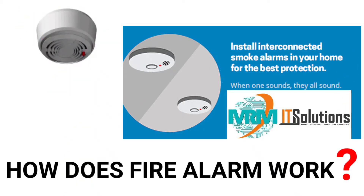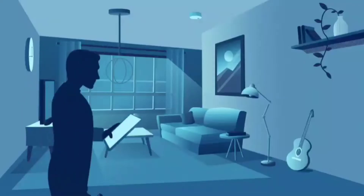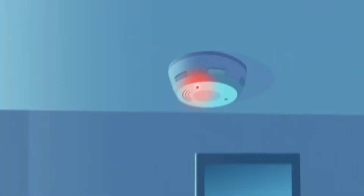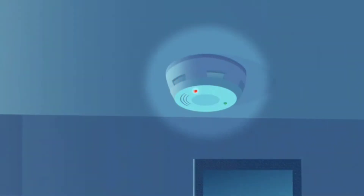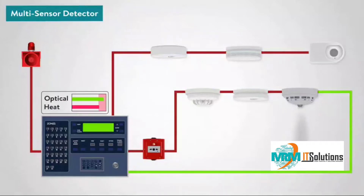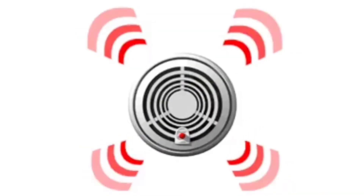How does a fire alarm work? A photoelectric smoke detector uses an infrared LED light beam to tell if there is smoke in the air. Over time, the sensor emits light through the optical detector's chamber. If the light detects numerous smoke particles passing through it, then an alarm is triggered.